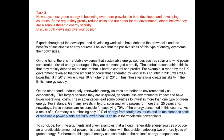'To conclude from the arguments and given examples, although renewable energy sources produce an unpredictable amount of power, it is possible to deal with that problem by adopting two or more types of green energy.' Yes, that's absolutely true and that's exactly what I said before. But you didn't mention that in your first main paragraph — so you need to be careful: don't add any new information in a conclusion. Make sure your conclusion is just based on the evidence and arguments you've already given. You shouldn't be adding a new idea right at the end, so you should have mentioned that fact in your first main paragraph.